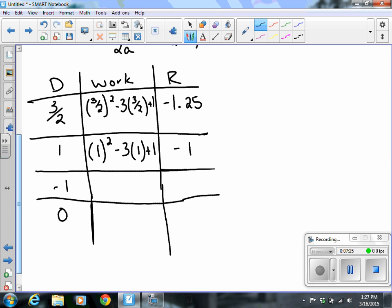Plug negative 1 in. And be careful if you're entering the negative 1 squared into your calculator. You need to have parentheses around it. Otherwise, what's going to happen is it's going to make it a negative 1. And we know that negative 1 times negative 1 is a positive 1. So that's what I'm telling you. Be cautious. So when I plug negative 1 in, I get a positive 5.